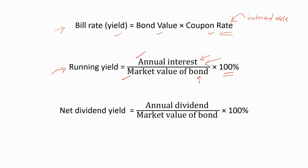We also have the net dividend yield — discussed earlier under shares — which is annual dividend divided by market value of bond, multiplied by 100%. The only change here is that we are now considering the value of the bond.